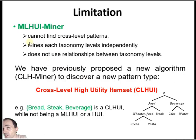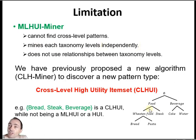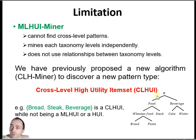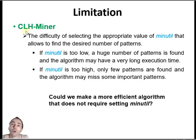This is a limitation because we cannot find a pattern like bread with steak and beverage, since they are not at the same level in the tree. Also, this algorithm is not so efficient because it mines each level of the taxonomy independently, so it does not use the taxonomy to reduce the search space. To address this limitation, in a previous work we proposed a new algorithm called CLHminer to find the cross-level high utility item set, and then we can find patterns like bread, steak, and beverage.